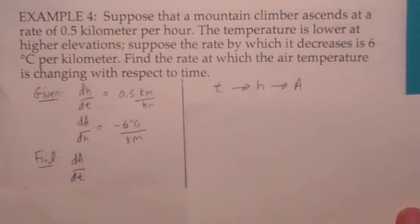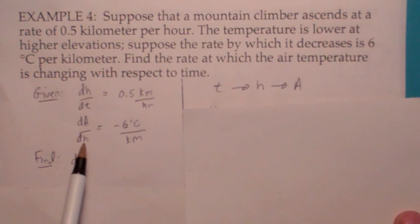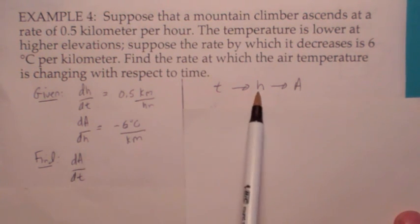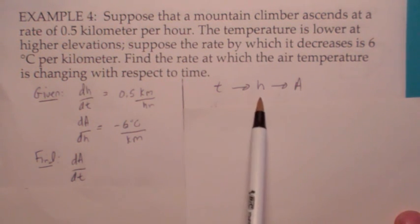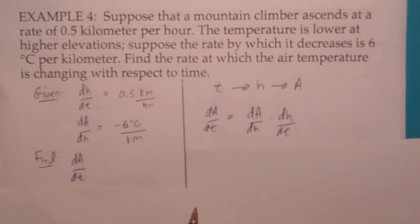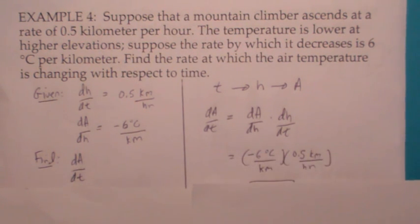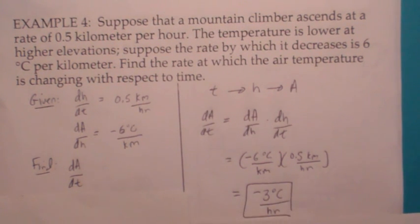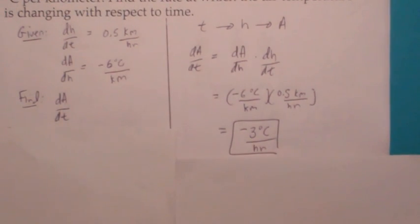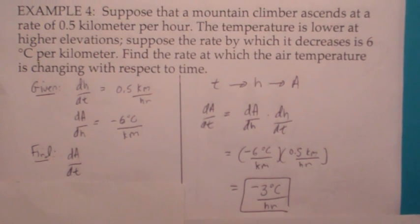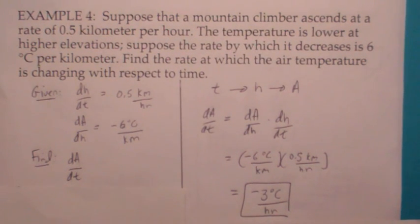The key to these kinds of problems is to figure out what's a function of what. Since they give you dh/dt and da/dh, it makes sense to think of h as a function of t and a as a function of h. So when you use the chain rule, da/dt equals da/dh times dh/dt. Plug in the given information — the kilometers cancel — and you get negative 3 degrees Celsius per hour. That means as the mountain climber is climbing the mountain, the temperature is going down 3 degrees Celsius for every hour.